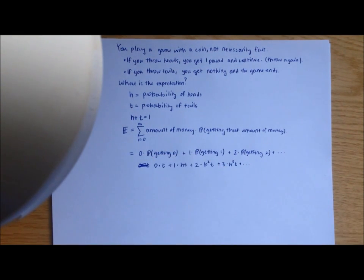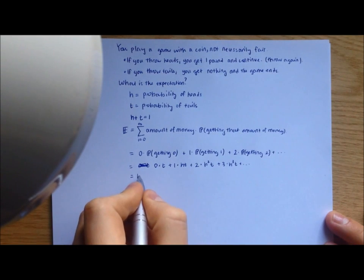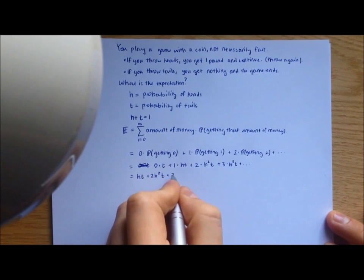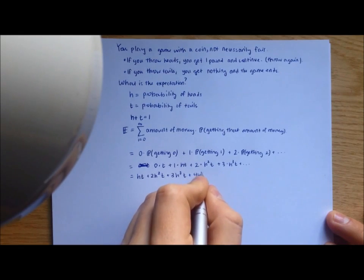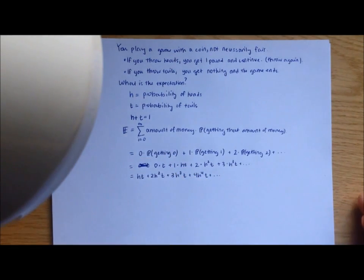So we've reduced this relatively complicated problem to just this infinite sum, but how are you going to evaluate this sum? Well, the first term is just zero, so let's get rid of it. So we have ht plus 2h squared t plus 3h cubed t plus, I'll write the next term, 4h to the 4t, and this sum continues forever.